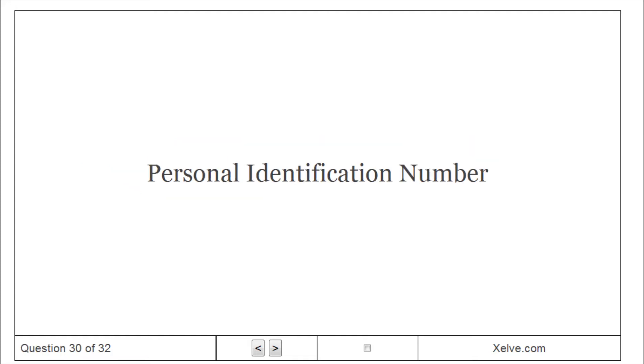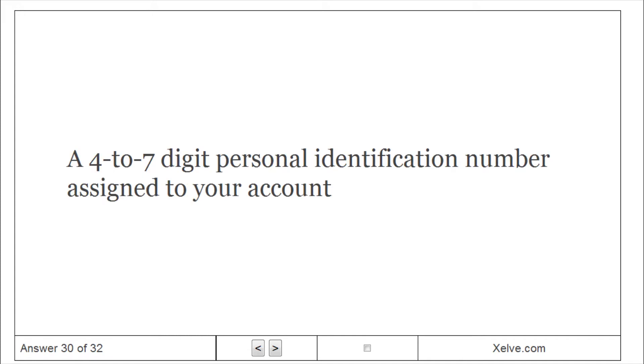Personal identification number. A 4–7 digit personal identification number assigned to your account.